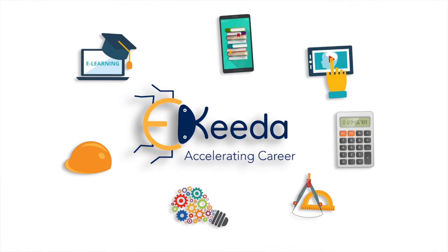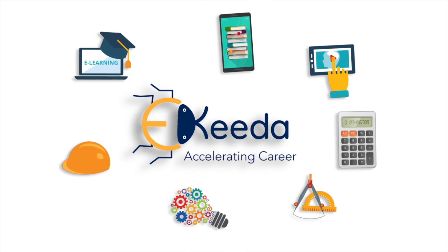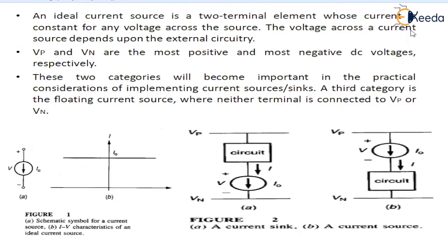An ideal current source is a two-terminal element whose current is constant for any voltage across the source. The voltage across this current source is dependent upon the external circuitry to which it is connected.